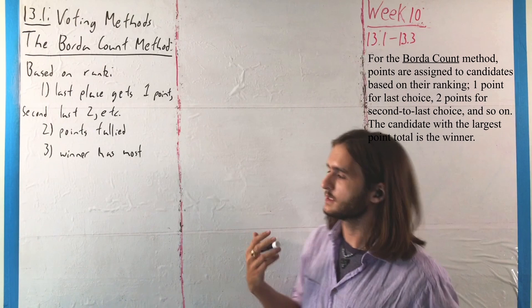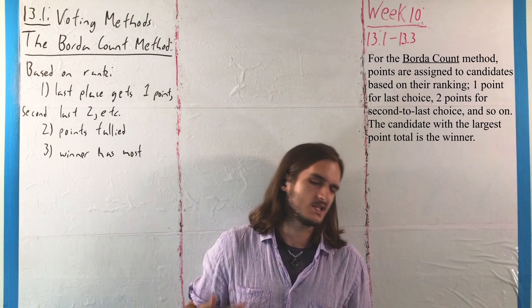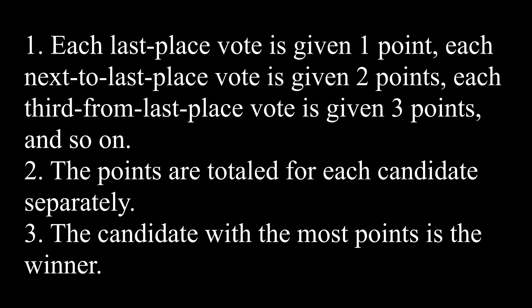Using the Borda Count method, the way that an election is decided is in terms of ranks on ballots, following essentially a three-step process that starts by scoring each of the ballots, where a last place vote gets one point, next to last gets two points, third from last gets three points, and so on until you reach first place, which gets the most points — something like n points if you have n options. Then the points are totaled for each separate candidate, and the candidate with the most points would be the winner.